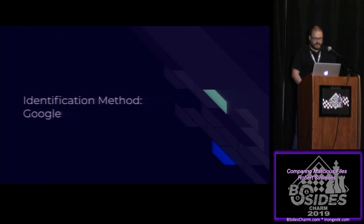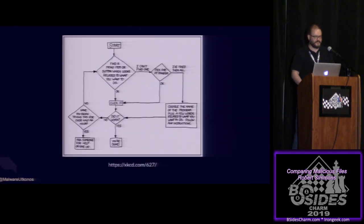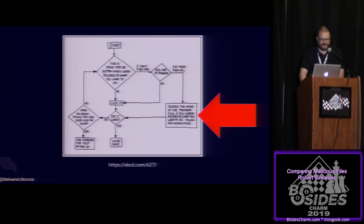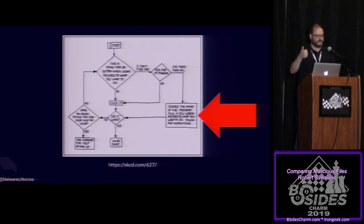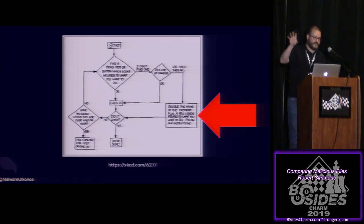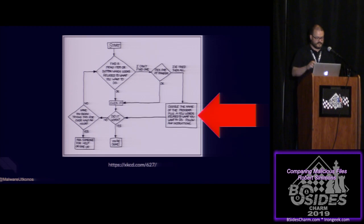And then there's always Google. Most of us who became IT experts became IT experts through this methodology — after all of the other things fail, just Google it. Even if you have a file hash, Google the file hash. You'll commonly find it showing up in VirusTotal. You might have Hybrid Analysis or any other sites that allow Google to index their sandbox results and other data. Google is always a good backup method.